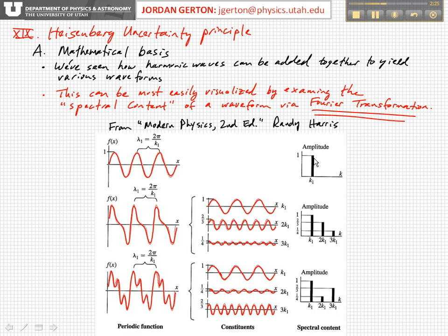Meaning that it has one particular wavelength. You have a single wave with one particular wavelength, and so basically the amplitude in k space, or wave number space, is 1, and it's at a wave number of k1.